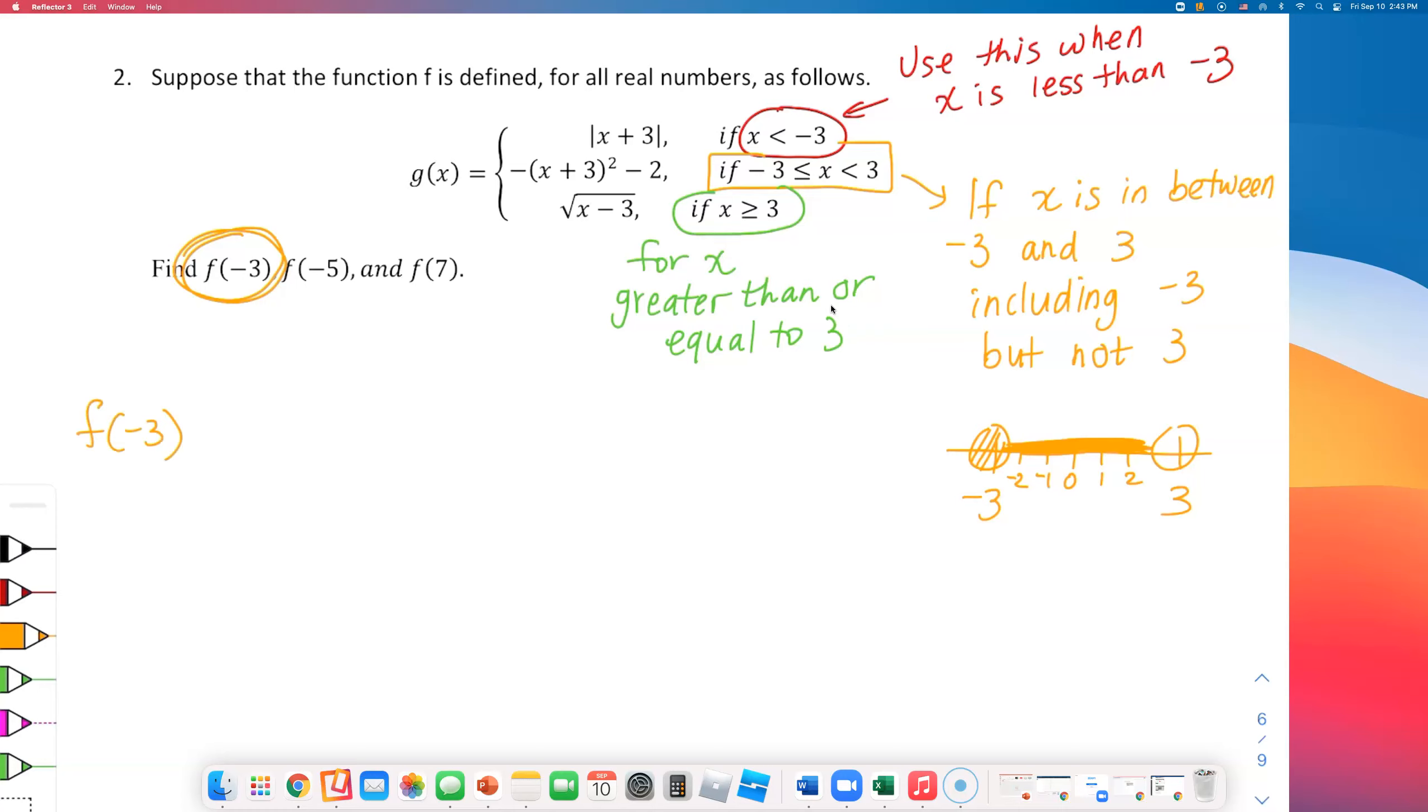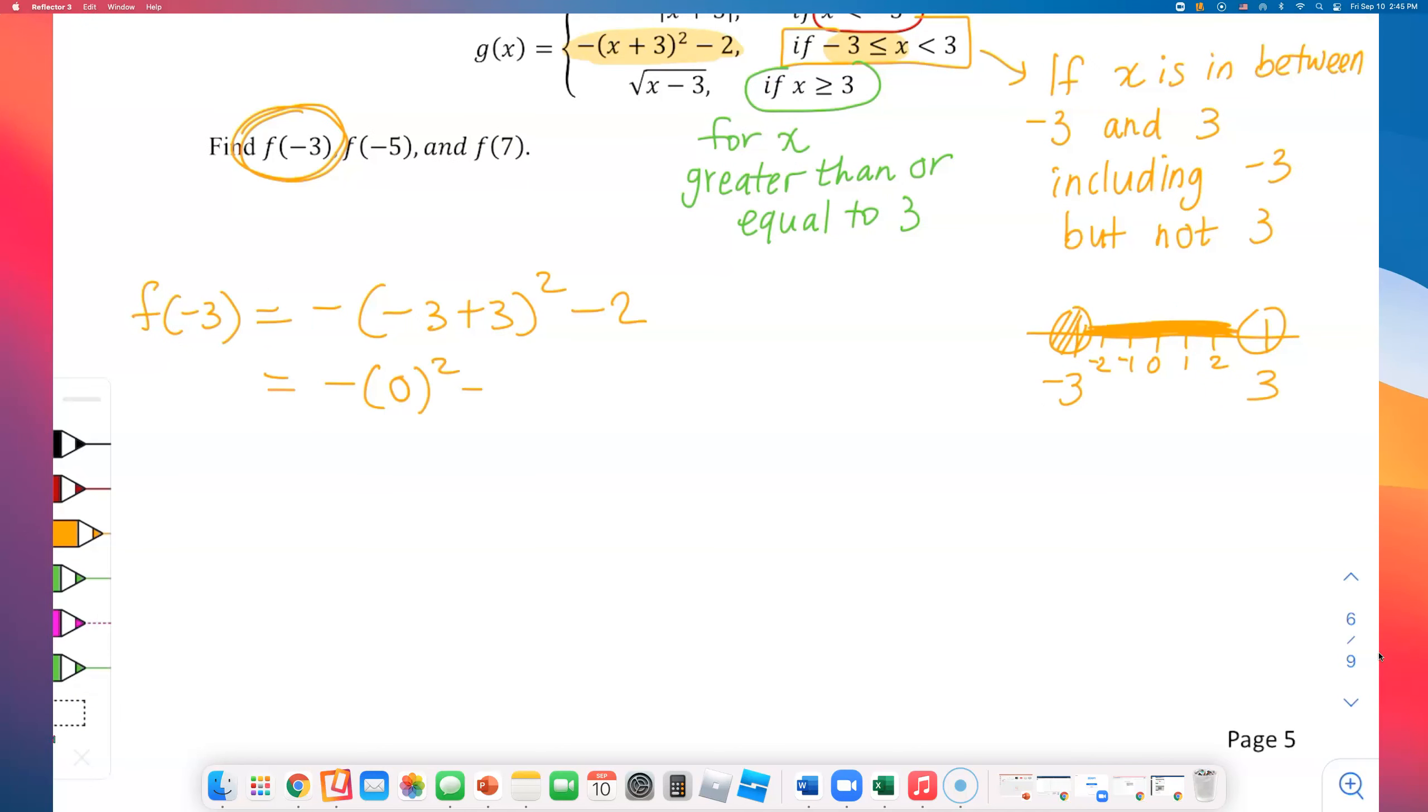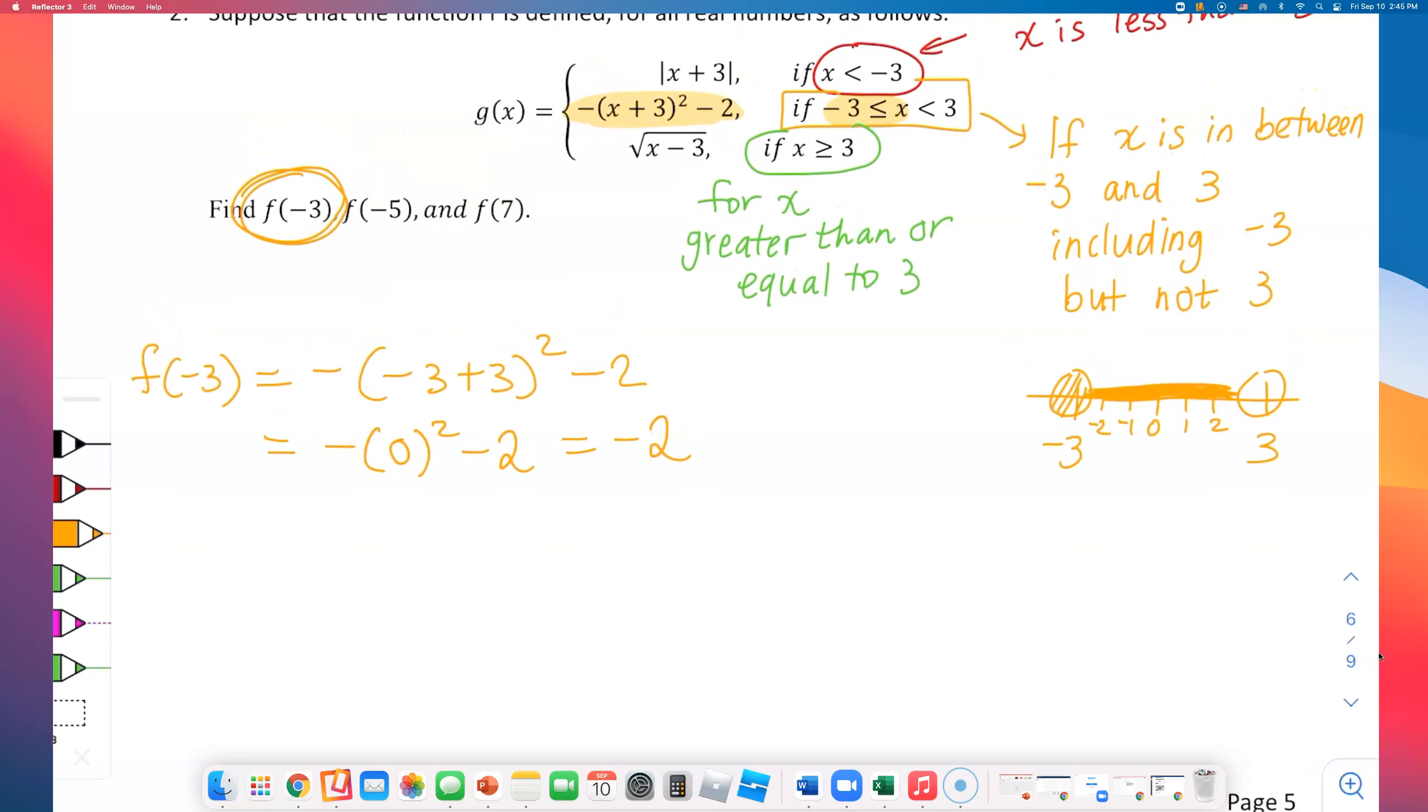So let's start with the first one. I have f of negative 3. Now, which piece do I need to plug this into? Is negative 3 less than negative 3? No. Is negative 3 in between negative 3 and 3 including negative 3? Oh yes. Remember, we said a closed circle at negative 3 because it says right here, if x is greater than or equal to negative 3, we should use this orange piece of function. So I'm going to go ahead and plug in negative 3 into that middle piece. It's a quadratic. And if I combine these two terms in the parenthesis, I will get 0. So I have to do negative 0 squared minus 2. But this entire term is just 0. So it turns into negative 2. So f of negative 3 is negative 2.